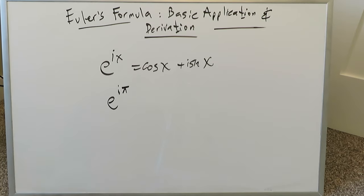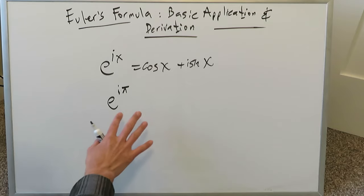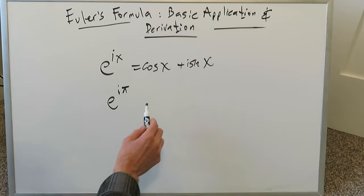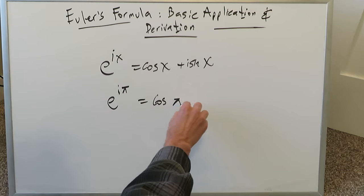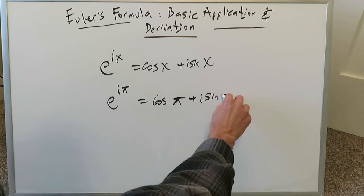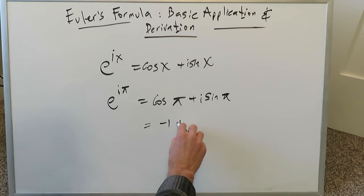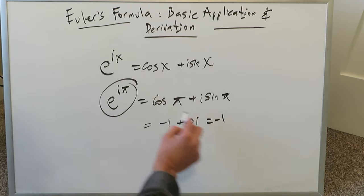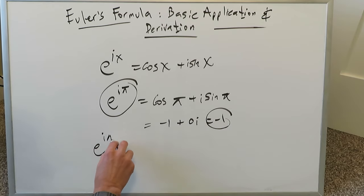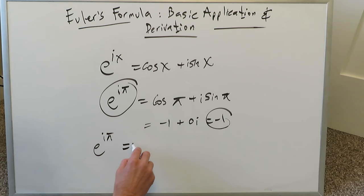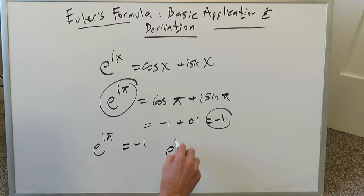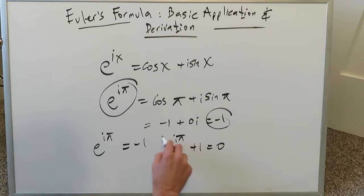Let this be the last basic application we look at, because the main focus of this video is the derivation. I promise you, this right here is actually very interesting and it might be very familiar to you. If you open this up using Euler's formula, you're looking at cosine π plus i sine π. Cosine π is always equal to −1, and sine π is equal to 0. You get −1 plus 0i, which equals −1. So e to the iπ is equal to −1. Bring the −1 onto the other side: e to the iπ plus 1 is equal to 0.